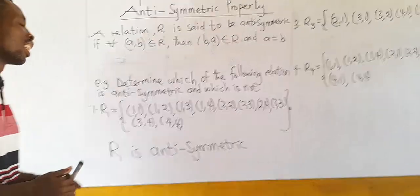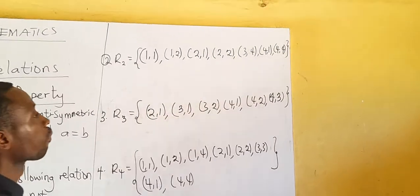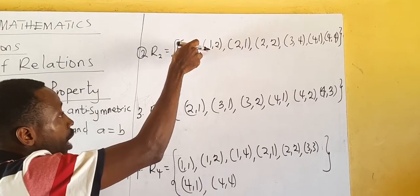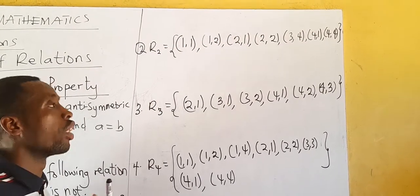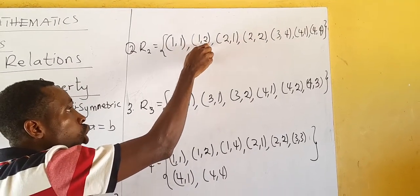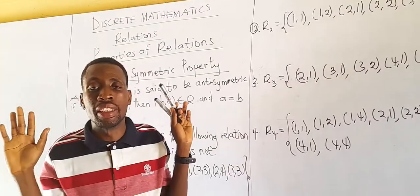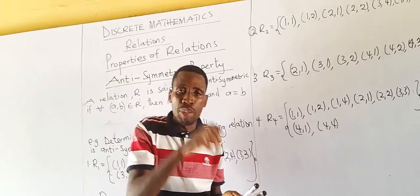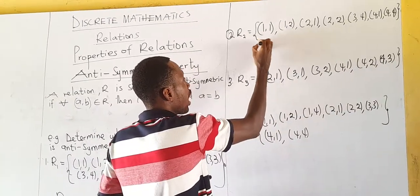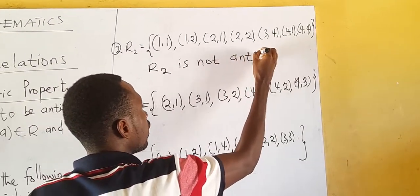Now let's look at R2. Flip (1,1) → still (1,1); it's a member and 1=1, perfect. Flip (1,2) → (2,1). Is (2,1) a member? Yes — and 2≠1. As soon as the flipped pair is a member and the elements are not equal, the relation ceases to be anti-symmetric. So R2 is not anti-symmetric.